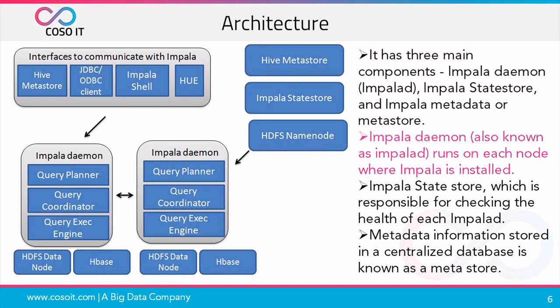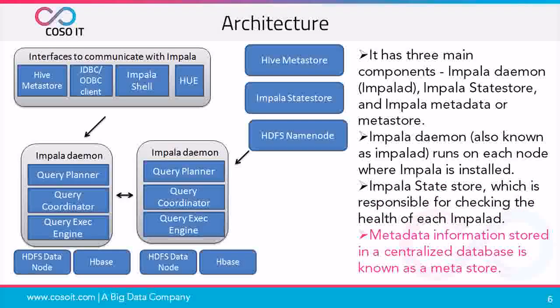The core Impala component is a daemon process that runs on each data node of the cluster, physically represented by the impalad process. Impala daemons are in constant communication with the state store to confirm which nodes are healthy and can accept new work. Impala state store is responsible for checking the health of each impalad. Handling the metadata information stored in a centralized database is known as the meta-store or the Impala metadata.